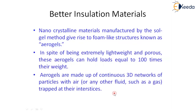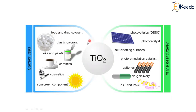Not only in a single industry — in food and drug applications, nanomaterials are used as colorants, plastic colorants, inks, paints, ceramics, cosmetics, and in sunscreen components. These are the current uses where nanomaterials have already been applied across many applications.